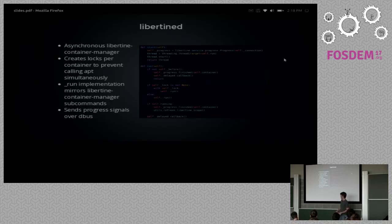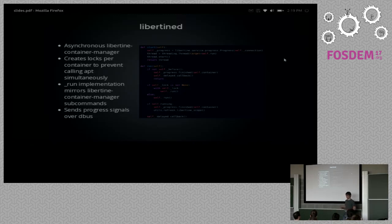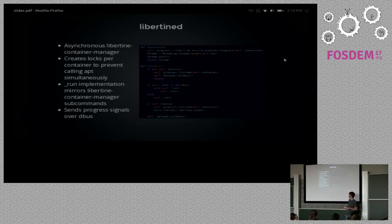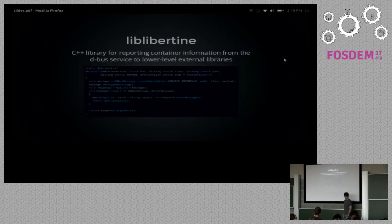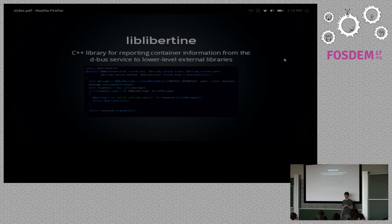We also have a DBus service written in Python. Many of the commands used in the container manager take a very long time to run and bad things will happen when those operations are interrupted — for instance, stopping dpkg can cause broken packages. We work around this with a completely asynchronous method using Python threads and sending updates via DBus signals. We currently use it to list container IDs and application IDs. Liblibertine is the root of discovering container information for several external libraries — it's a wrapper around a client for LibertineD, giving C++ libraries a convenient way to access container information without talking directly to DBus.